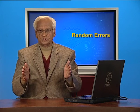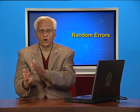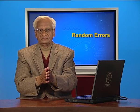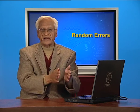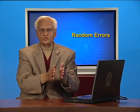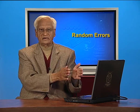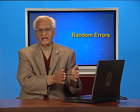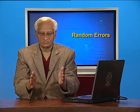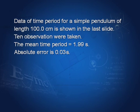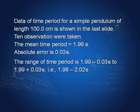This absolute error gives the range on both sides of the mean. If you add it, this gives the higher side; if you subtract it from the mean, this gives the lower side. So in this case, the lower side is 1.96 and the higher side is 2.02. Therefore, the actual time period lies between 1.96 and 2.02 seconds.